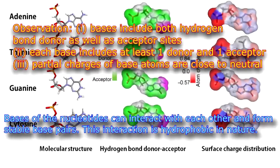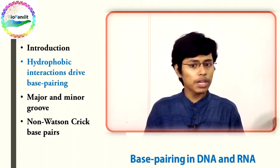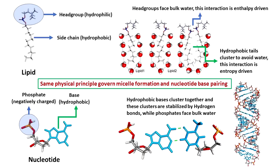Because of these properties, bases of the nucleotides can interact with each other and form stable base pairs. This interaction is hydrophobic in nature — I would suggest you watch our video on the hydrophobic effect. Just a short and simple description for now: nucleotide base pair formation follows the same physical principle as micelle formation by amphiphilic molecules. In micelle formation, the hydrophobic side chains cluster together to maximize entropic gain, and the polar head groups face the bulk water to maximize enthalpy gain. Nucleotides have an analogous molecular structure — the minimum free-energy structure is that in which the base pairs stack together and the phosphates face the bulk water. The hydrophobic effect underlies micelle formation, protein folding, nucleic acid structure, protein-ligand interactions, and everything.